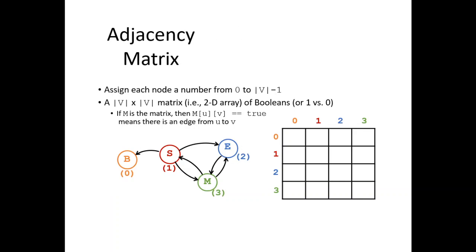Let's begin with the adjacency matrix. We have to assign each node a number from 0 to V minus 1. We have the formula there. We have a V by V matrix, a two-dimensional array of booleans from zero. We have to check if the matrix M is equal to two-dimensional.